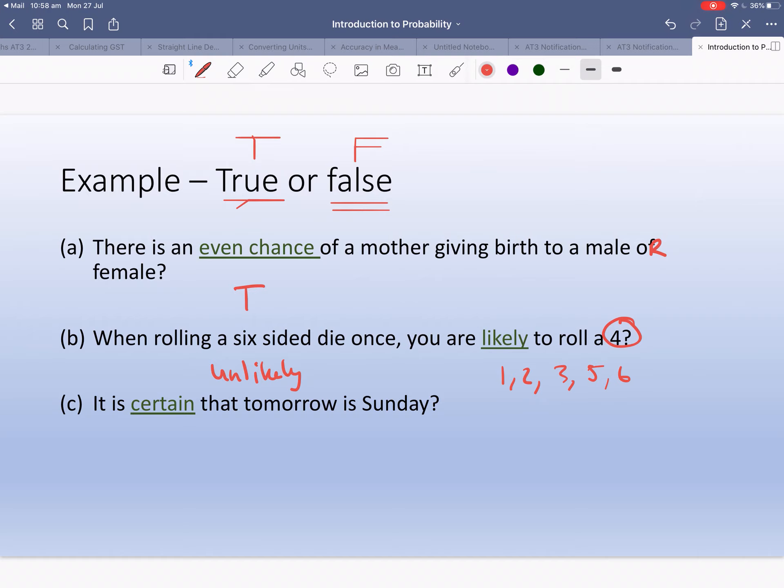It is certain that tomorrow is Sunday. I'm going to say that's false. It is certain that tomorrow's Sunday - that is false. But if you for some reason are watching this on a Saturday, on a weekend, good on you, then this will have to undoubtedly change to true.